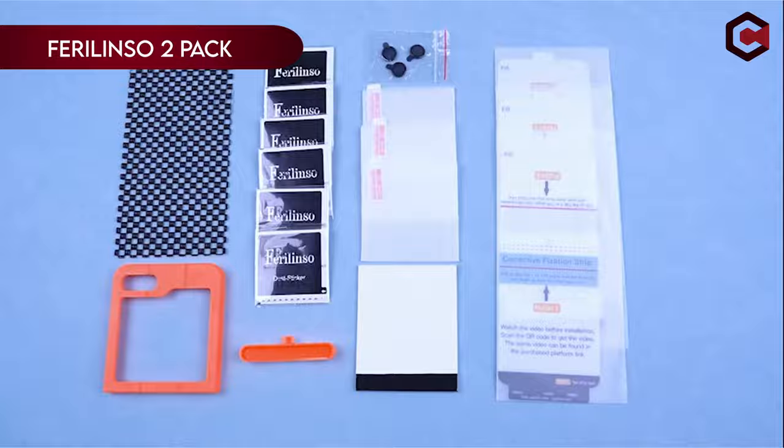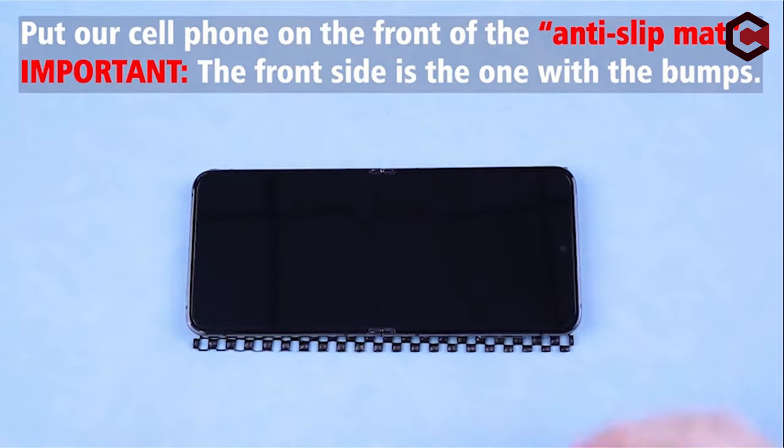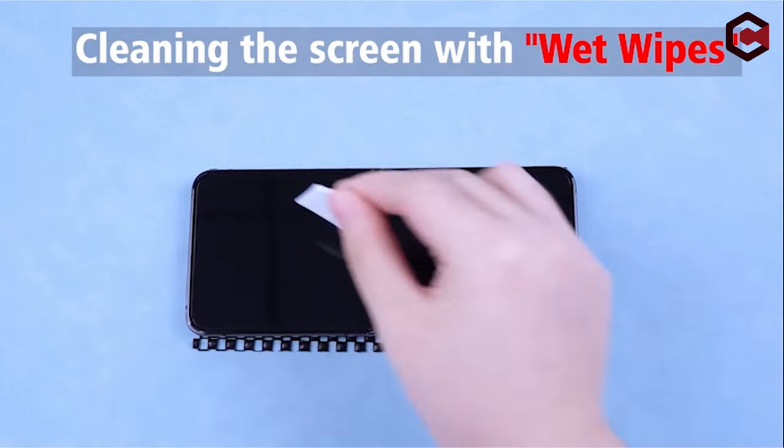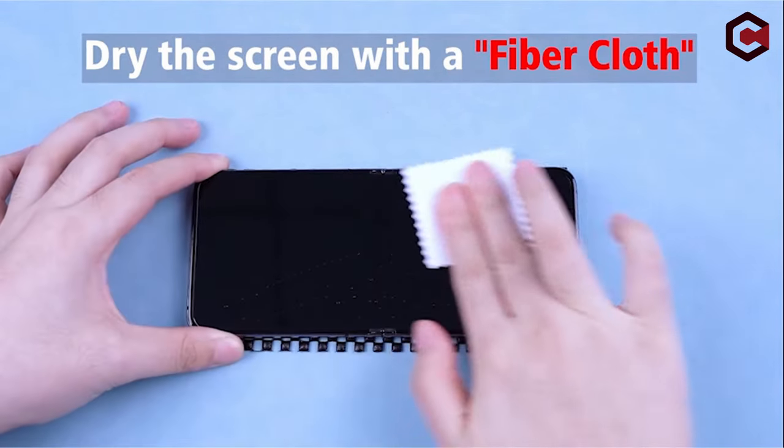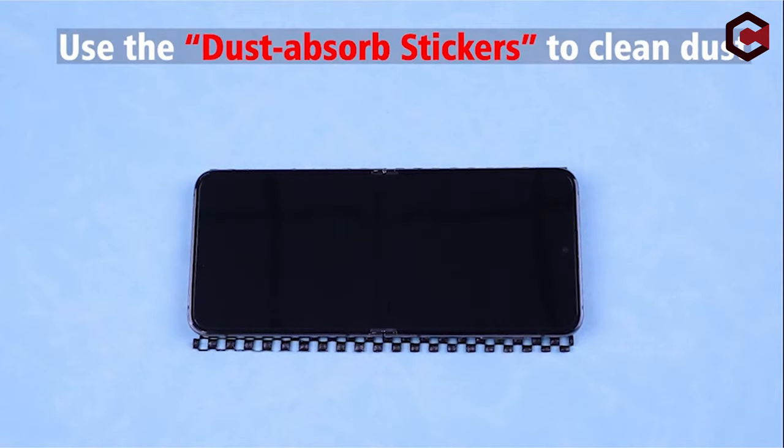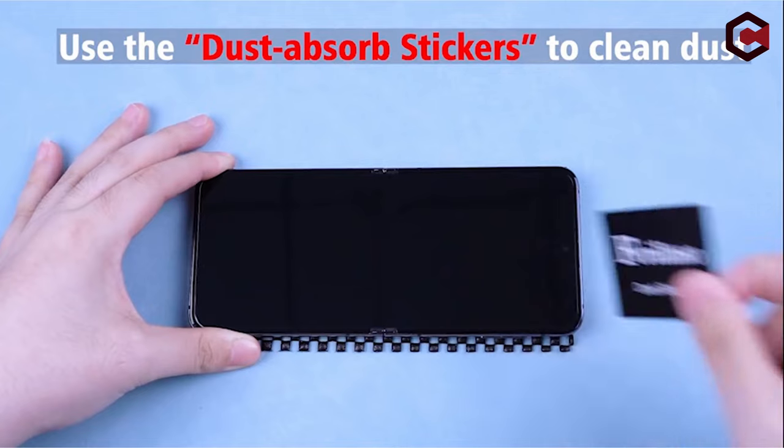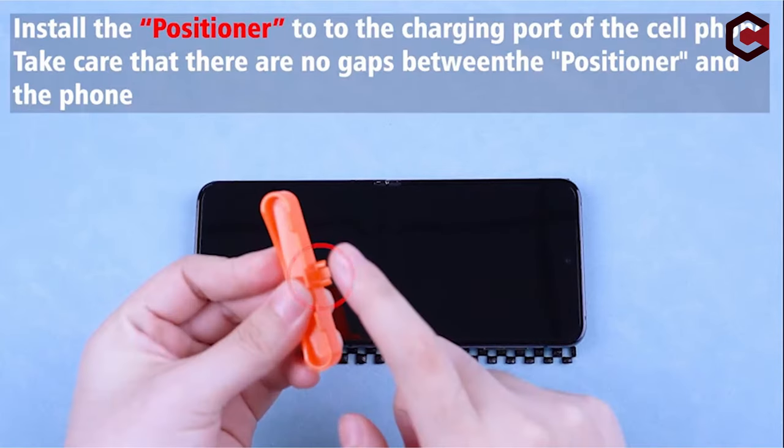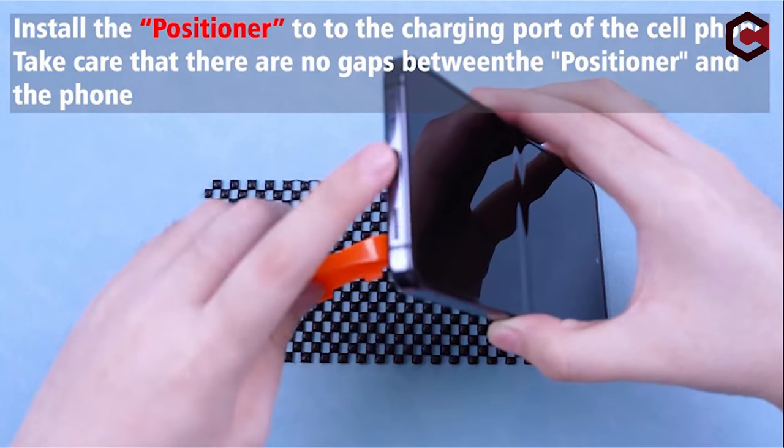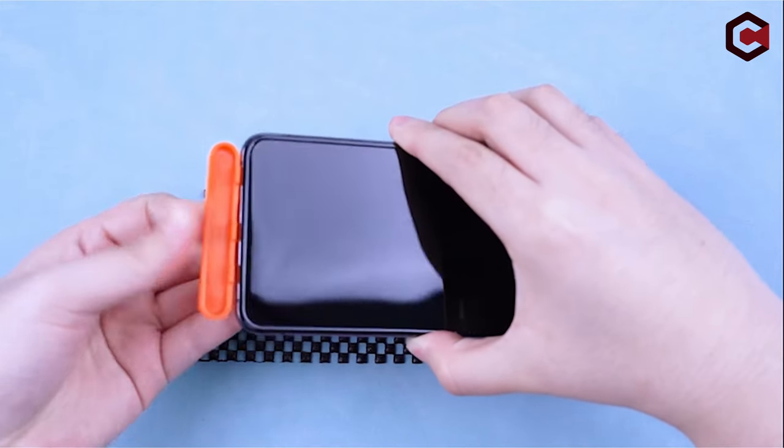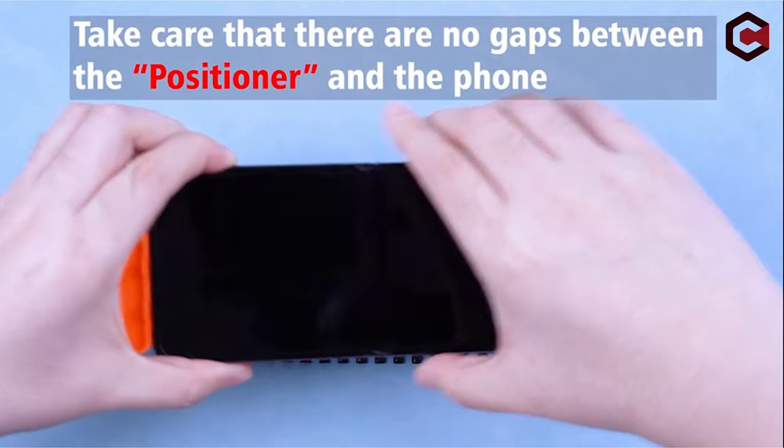On number 1, Ferralenso 2-Pack. Ferralenso offers a practical solution with its two-pack screen protectors for Samsung Galaxy Z Flip 6, 6.7 inches. Designed for durability and clarity, these protectors ensure high transparency while protecting against scratches and daily wear. They feature easy installation with precise cutouts for the camera and sensors, maintaining touchscreen sensitivity. Ideal for safeguarding the Galaxy Z Flip 6's display, Ferralenso screen protectors promise reliable defense without compromising on user experience.